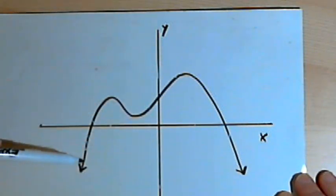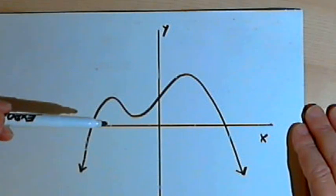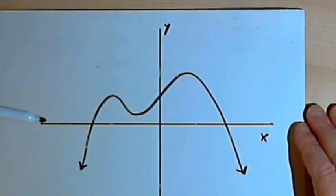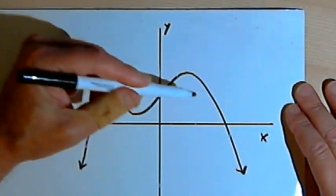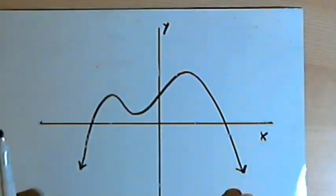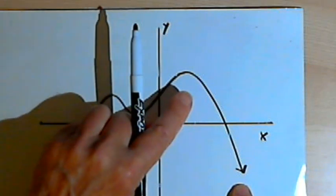I've got a very rough graph here. I've got an x and y axis, but there are no numbers on the graph. Now even without numbers, I can still state quite a few things about the original function. I can do that by looking at the end behavior of the graph and also at the number of turning points.